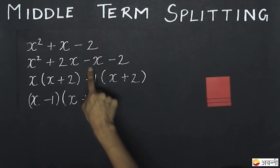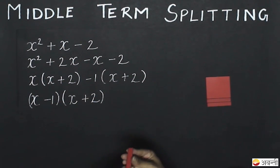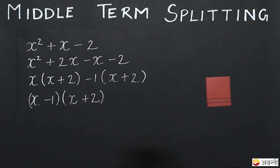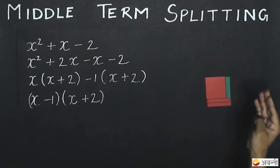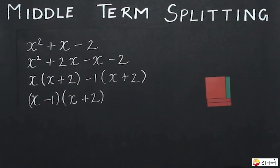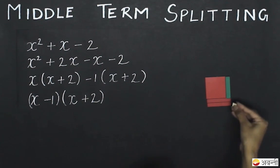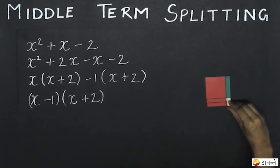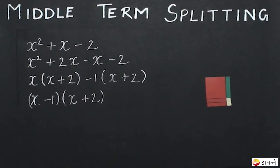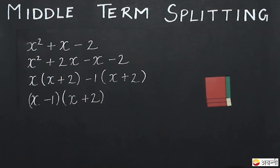To represent minus x, I will take another strip but use its green side to show that it is not part of this area. I will place it on top of the square to show that this strip is decreasing the area, not increasing it. Similarly, for minus 2, I will take two unit squares using their white sides and keep them on top of these strips, again showing a reduction in area. Considering only the red part, the area is x minus 1 into x plus 2, which is our expression.